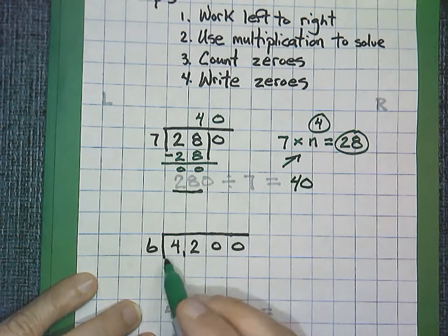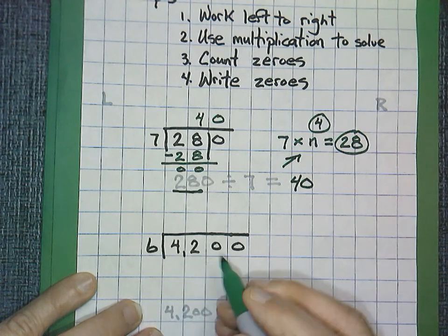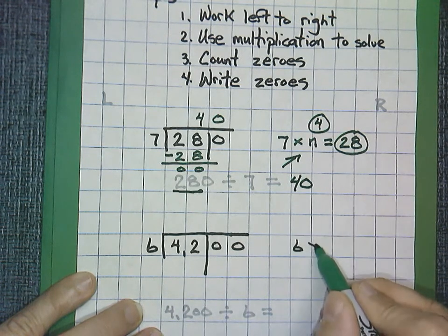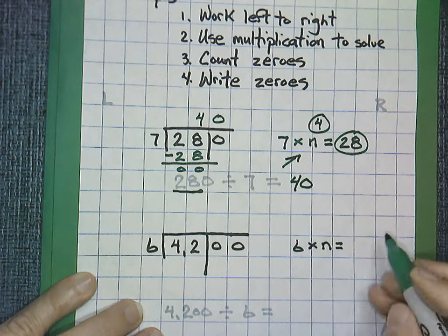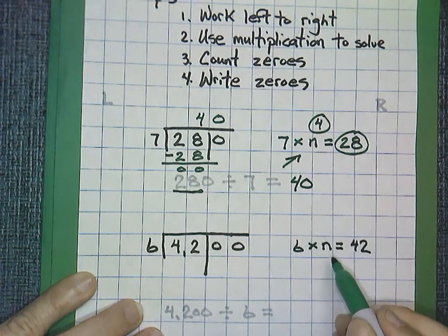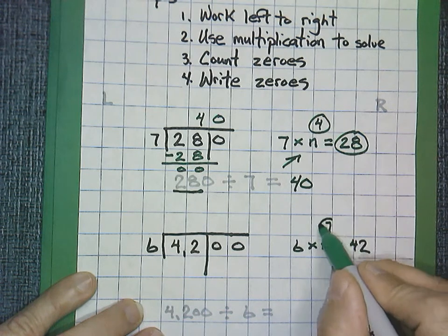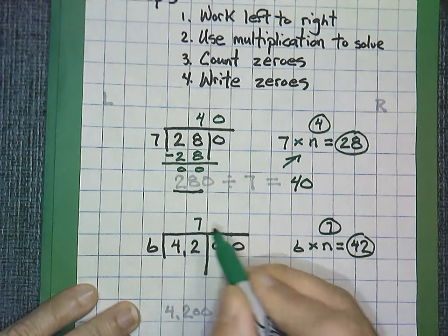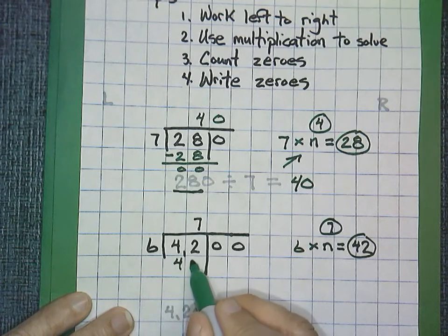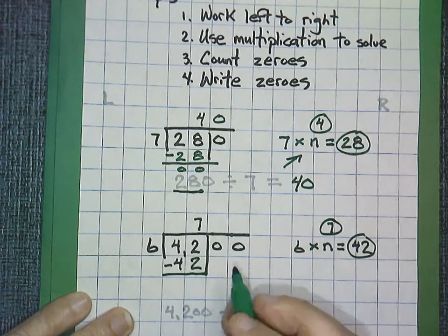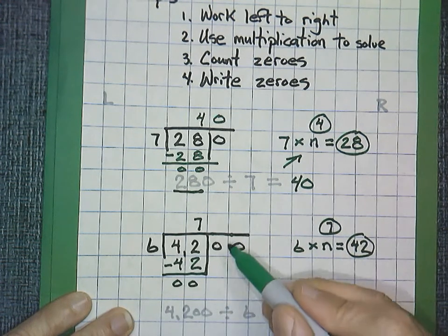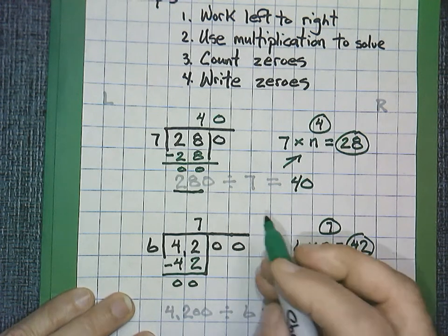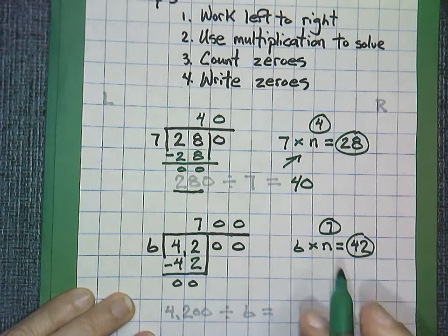4,200 divided by 6: 6 does not go into 4, but it does go into 42. We write our equation: 6 times n equals 42. Solving for n, that would be 7. We use both numbers — 7 up on top for our quotient and 42 on the bottom. They are an exact match, and we do not have any remainder. We count our zeros: 1, 2. Our quotient is 700.